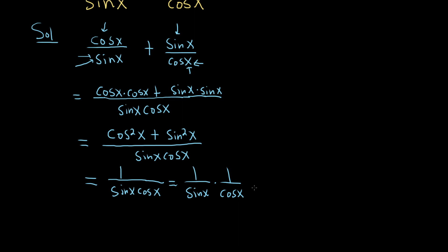So 1 over sine is the same thing as cosecant. 1 over cosine is secant.